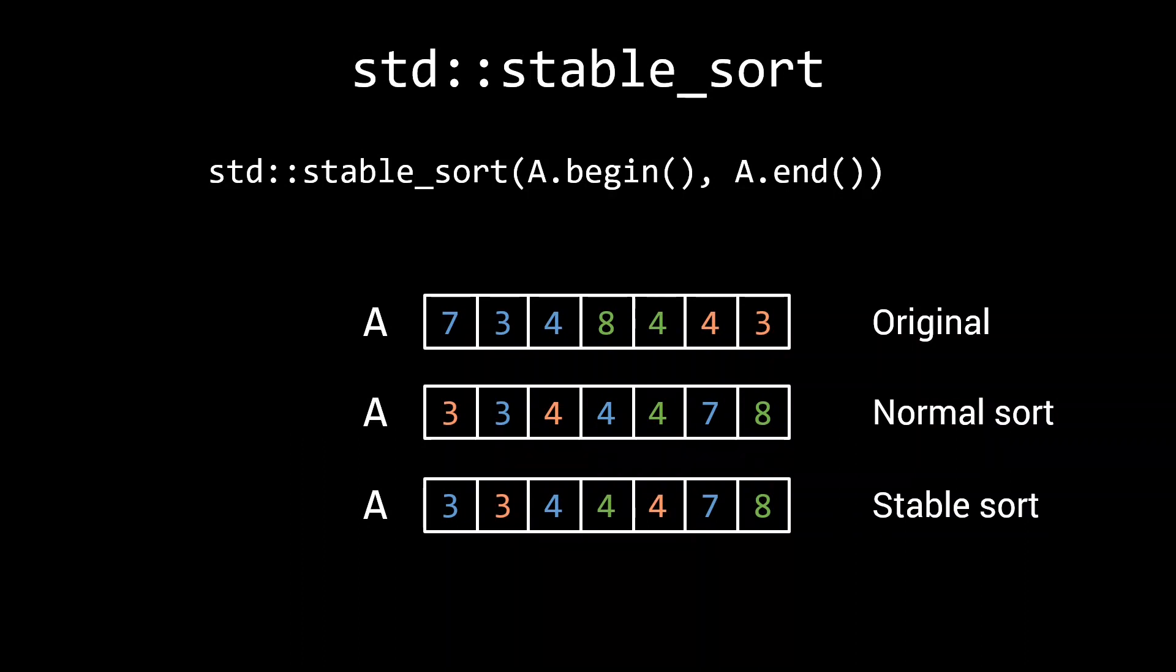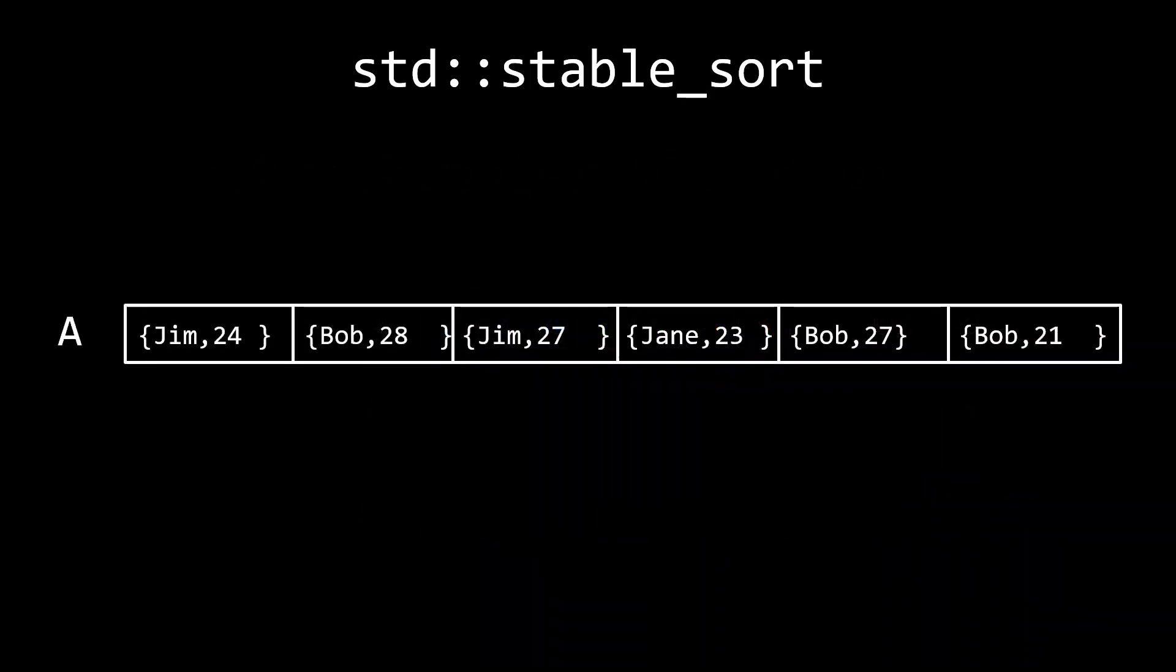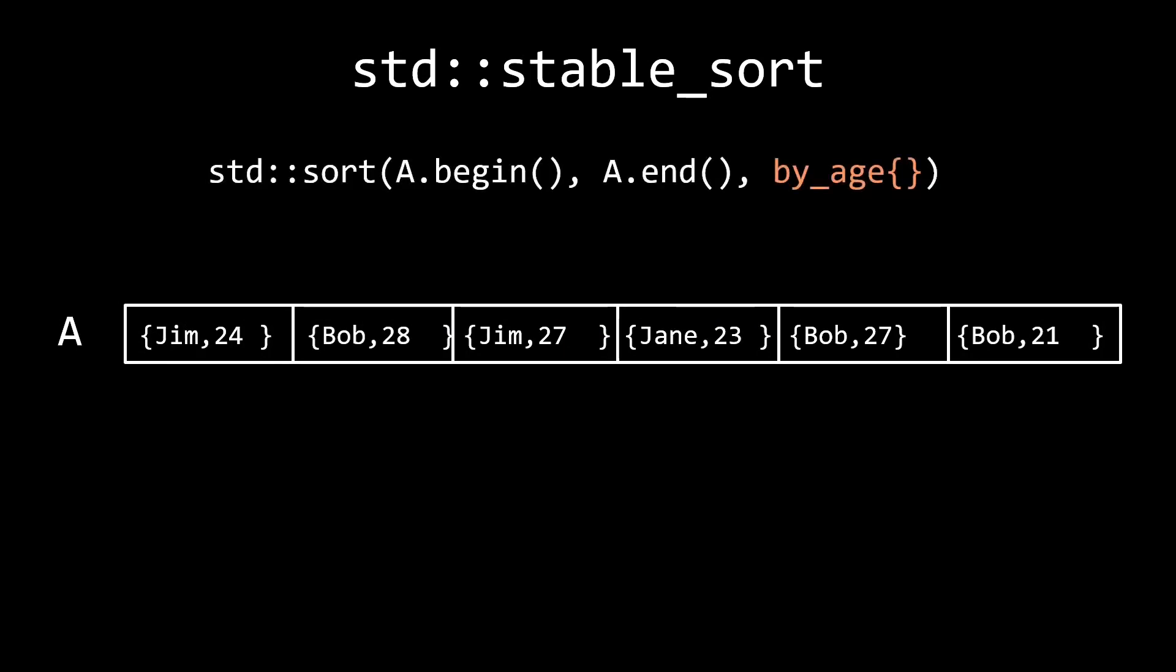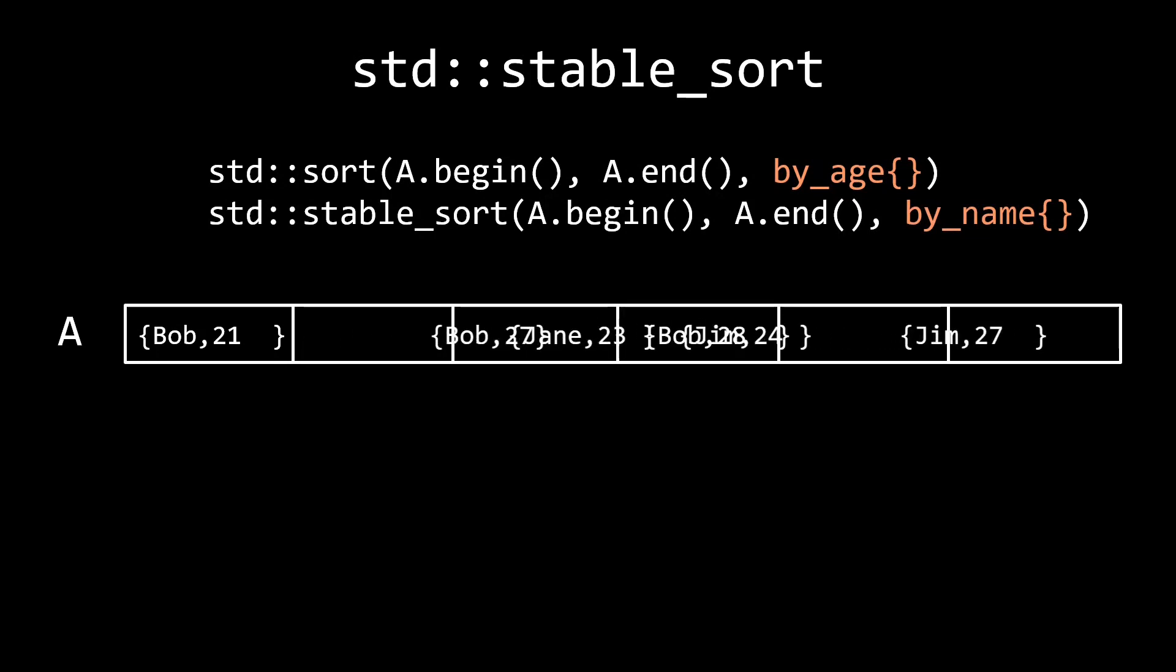Stable sort is particularly useful when you want to sort more complex data based on different members while maintaining any order previously present. Here I have a list of name and age pairs. Now, say this list was already sorted by age before. If I now do a stable sort by name, to put all the bobs in front of the Janes and Jims, you'll find that the people with the same name are still sorted by age. That's the power of stable sort.